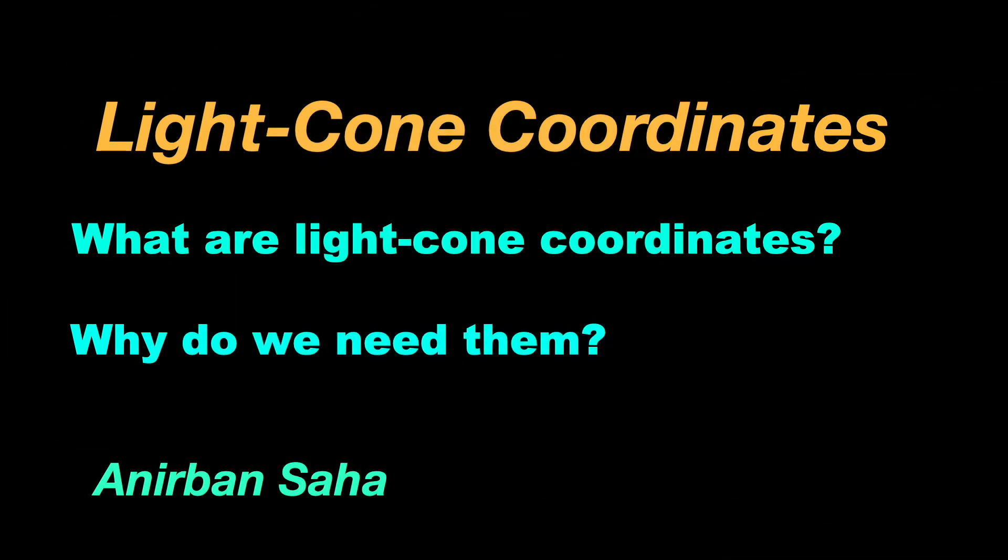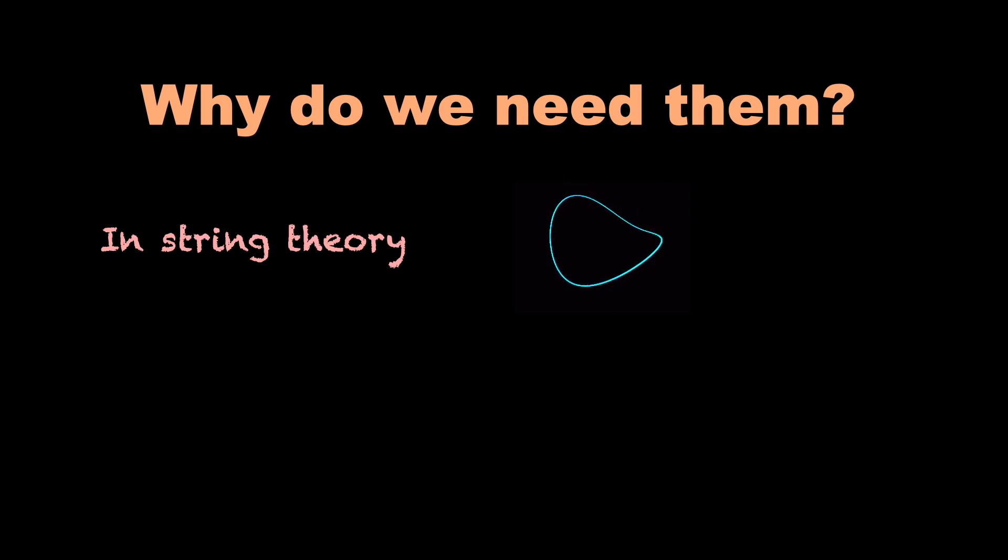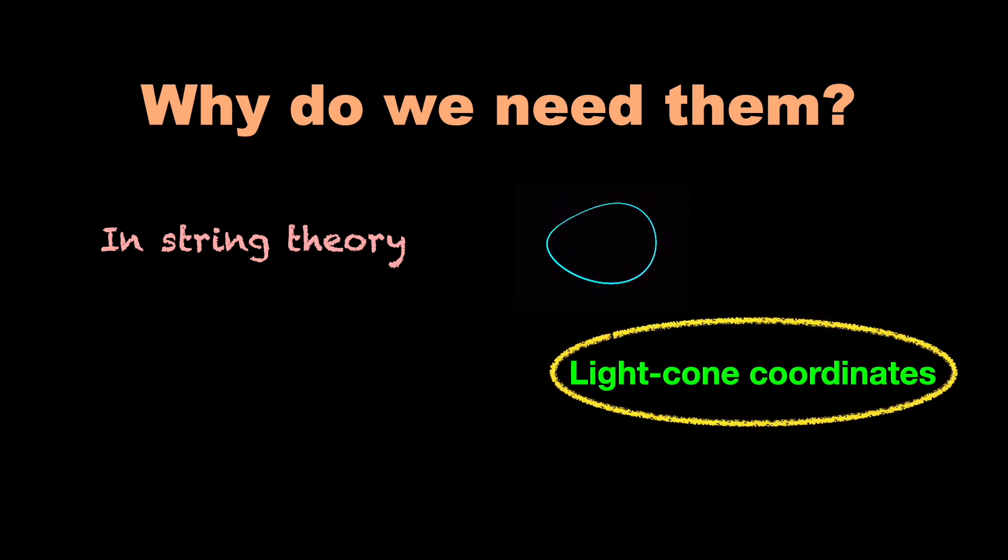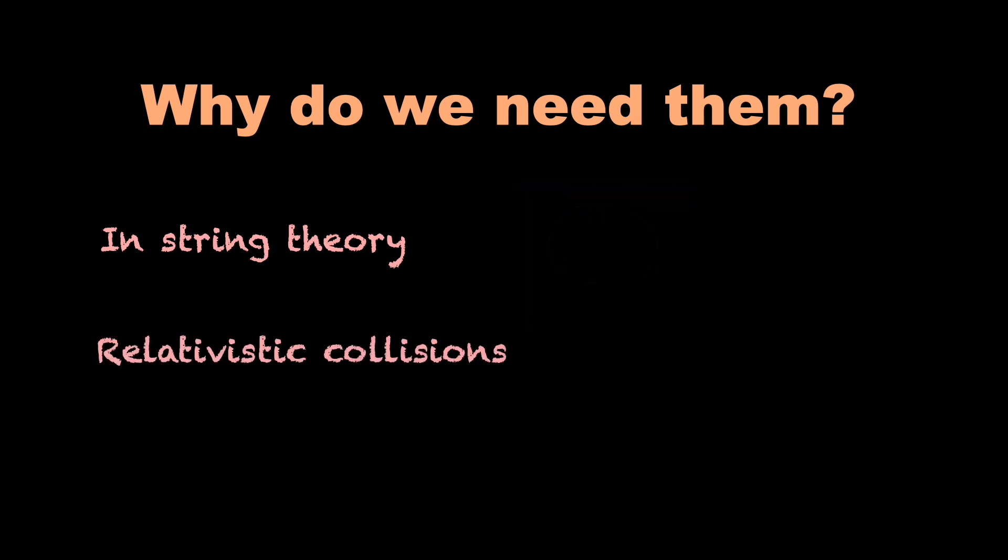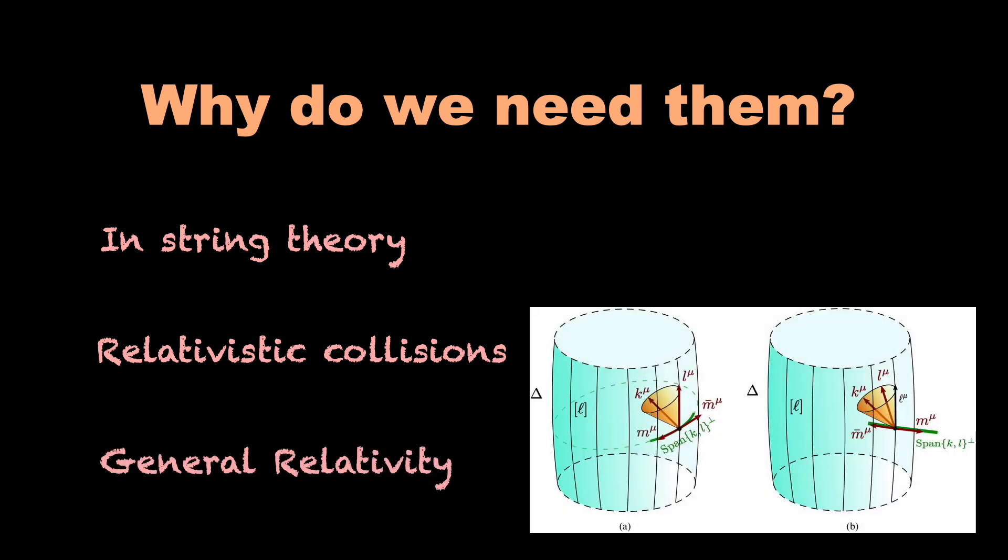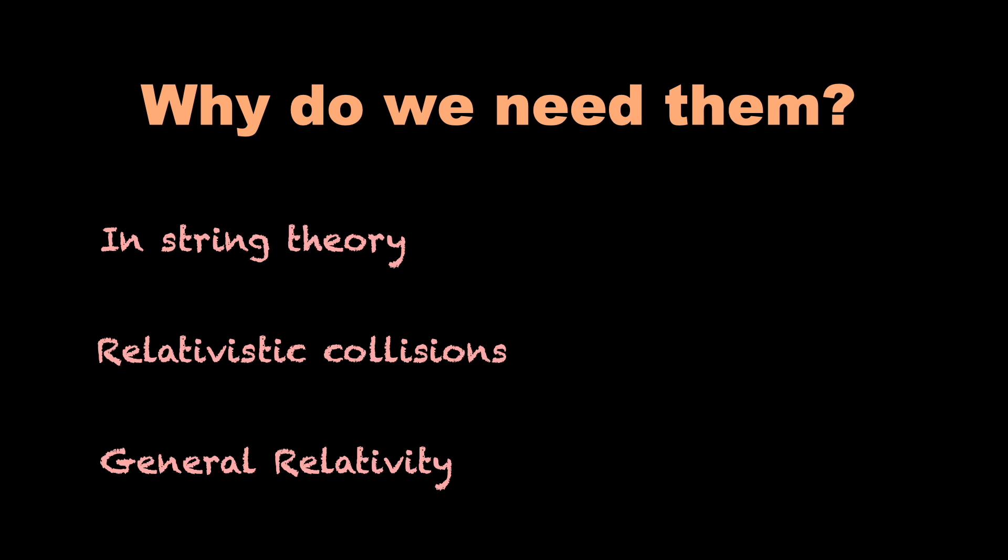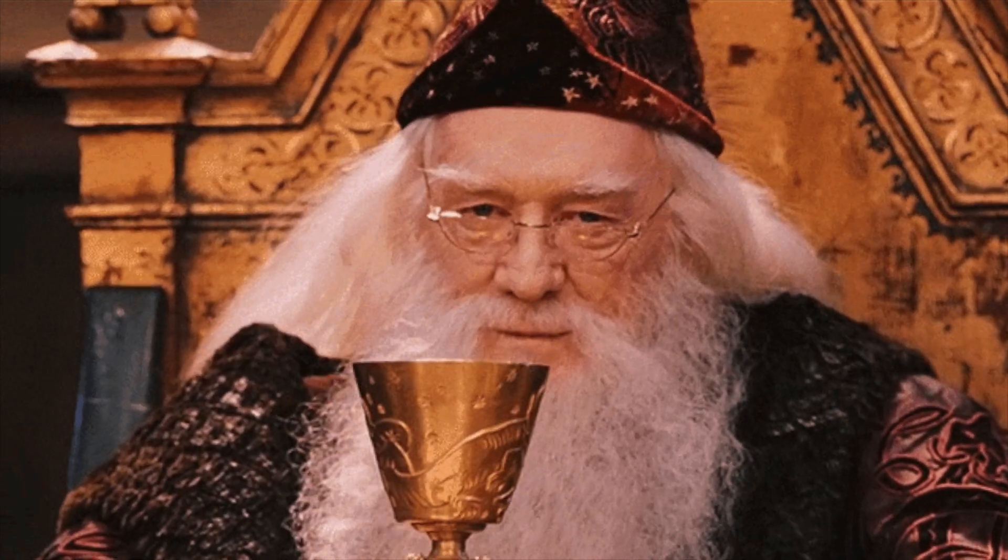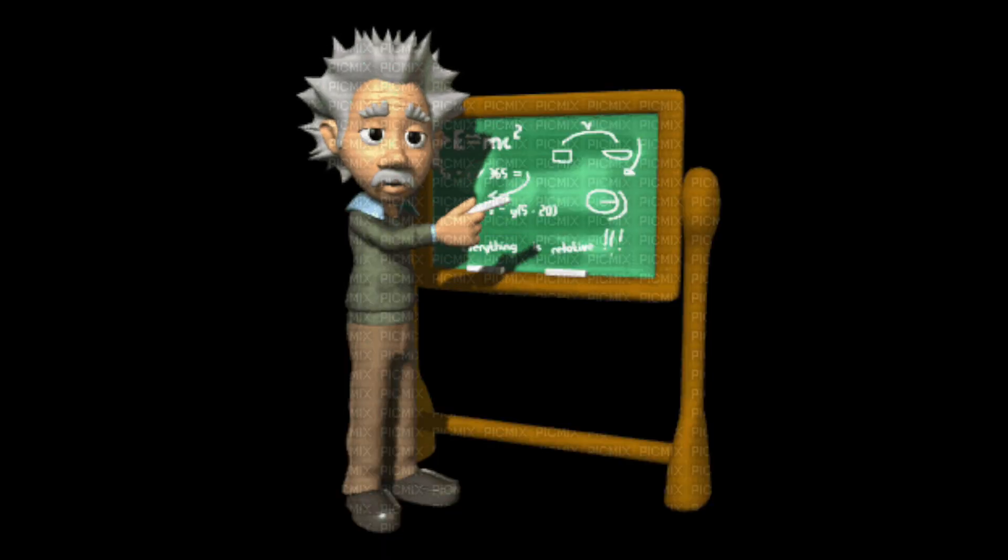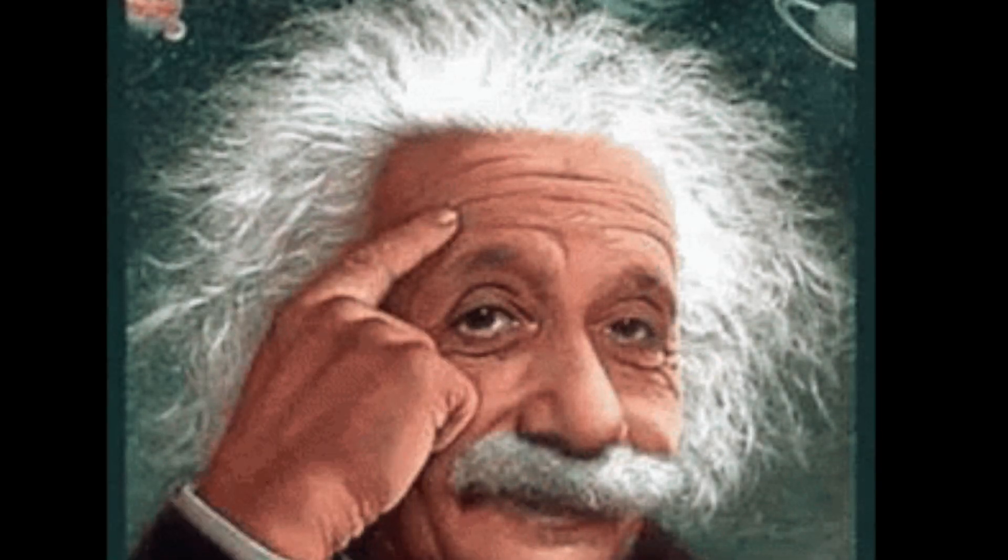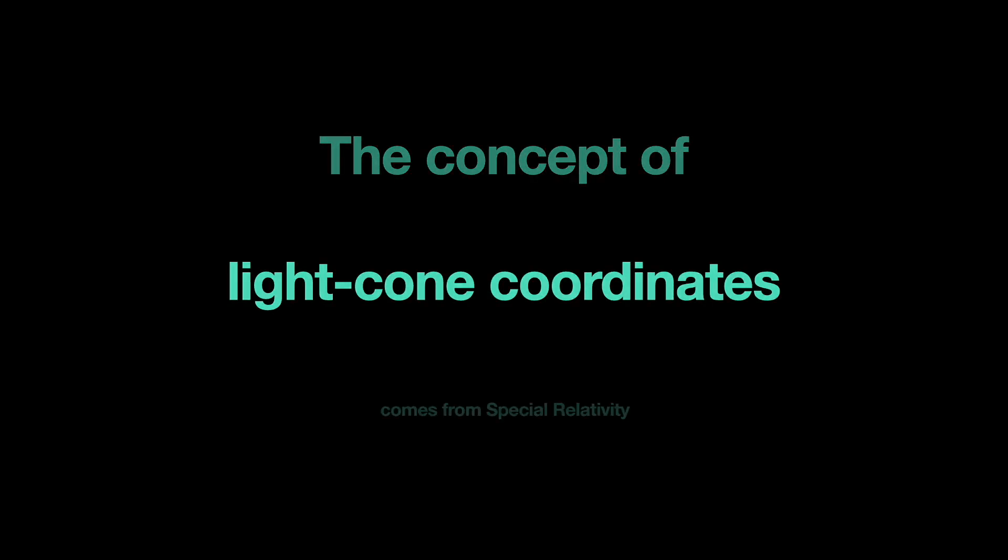Something tells me we should start by answering the second question first. The light cone coordinates come in handy in certain advanced areas of physics. For example, in string theory, when we quantize a closed string, the calculation simplifies significantly if we trade in the standard Cartesian spacetime coordinates for the light cone coordinates. Also, when dealing with the dynamics of a relativistic particle, for example in relativistic collision scenarios, and also in certain versions of general relativity.